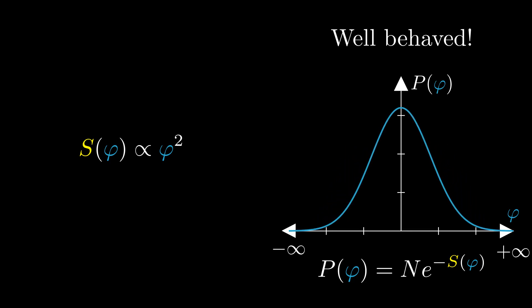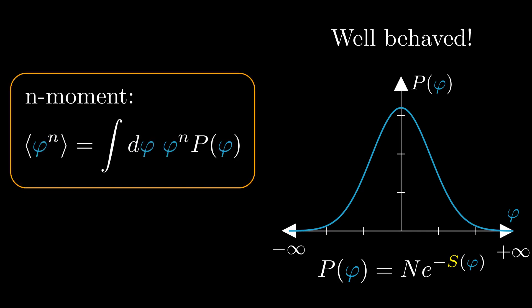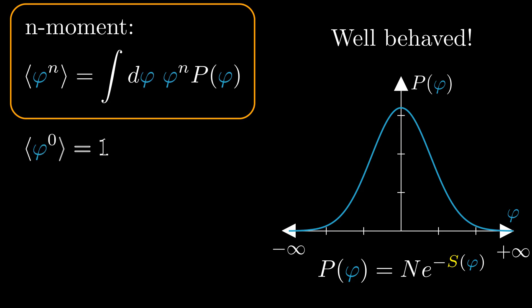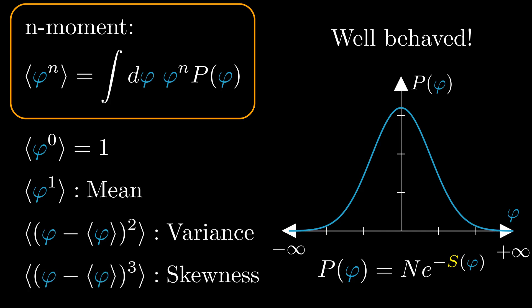To get a better idea about the behavior of this probability density, it is useful to determine its moments. The nth moment of a statistical variable is defined like this. The zeroth moment should then always be equal to 1, and the first moment is what you know as the expectation value of the field. Using these moments, we can also compute the variance, the skewness, and so on.